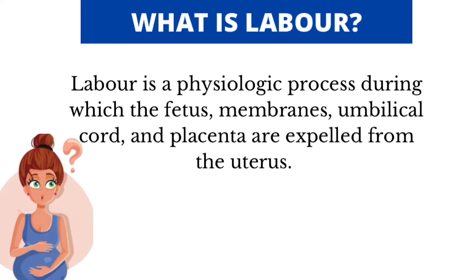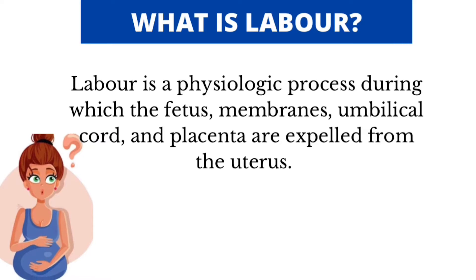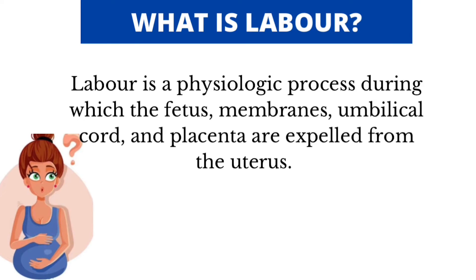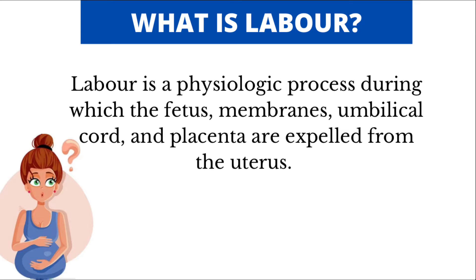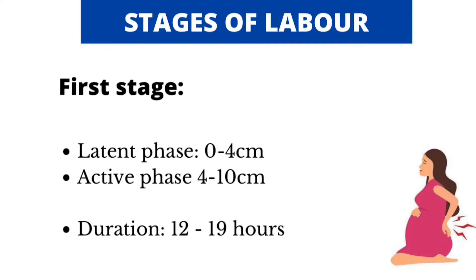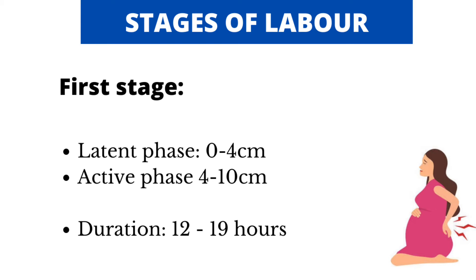Let's start by reminding ourselves of what labor is. Labor is a physiological process during which the fetus, membranes, umbilical cord and placenta are expelled from the uterus. Labor occurs in phases or stages. The first stage is further divided into the latent phase and active phase. It lasts for about 12 to 19 hours, and the latent phase is from 0 to 4 centimeters.